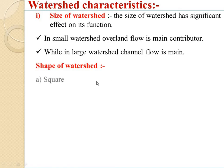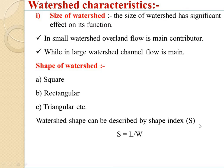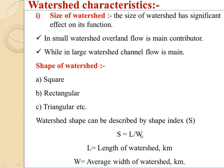The shape of watershed can be square, rectangular, triangular, etc. Watershed shape can be described by the shape index, indicated as capital S, where the formula is: S equals L divided by W. Here L stands for the length of the watershed in kilometers, and W stands for the average width of the watershed in kilometers.